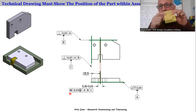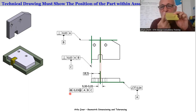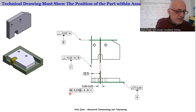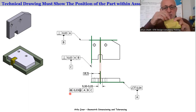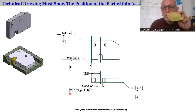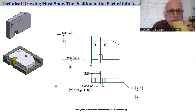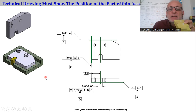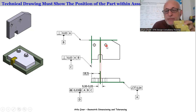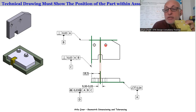Now we've finished the locking of the two parts using the key. We will also fix two parts using two bolts. So we have to dimension the holes — the diameter of the holes, the tolerance of the diameter, and the position of the holes. The position is very important for a good assembly.